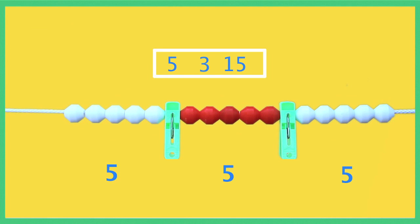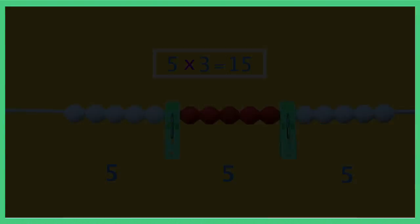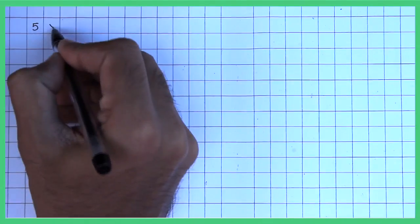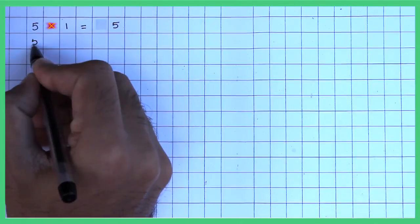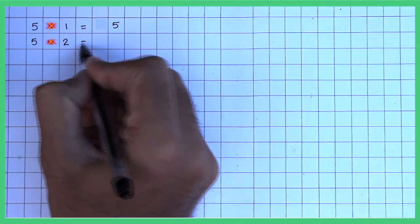Now introduce students to the multiplication sign. This is written as 5 multiplied by 1, 5 multiplied by 2, and so on.